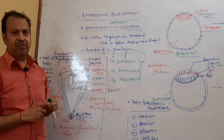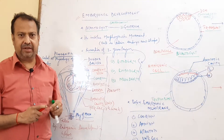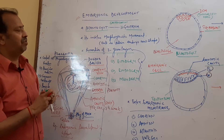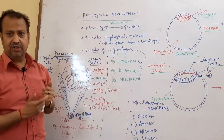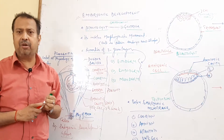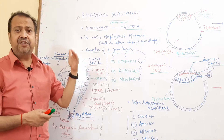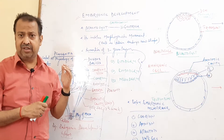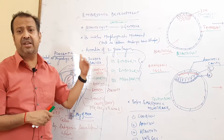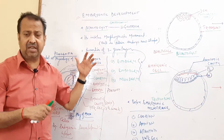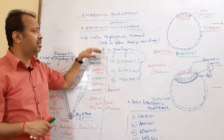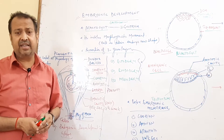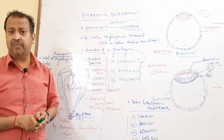Hello friends, today's topic is embryonic development. In the previous class, we already discussed early embryonic development, where division takes place in the zygote. Division in the zygote is called cleavage. Cleavage produces many cells called blastomeres. Blastomeres form a ball-like structure called a morula, which then turns into the single-layered blastula.